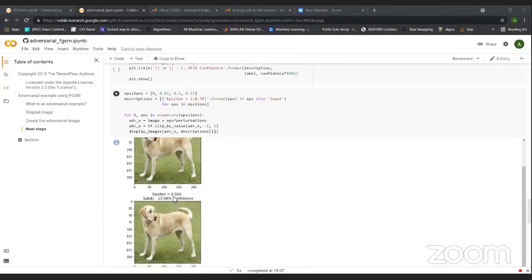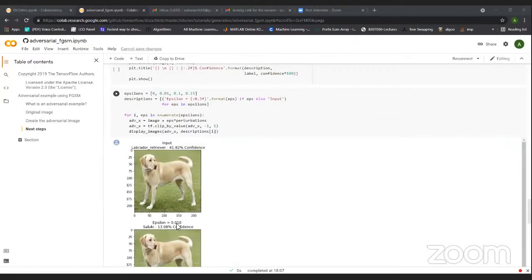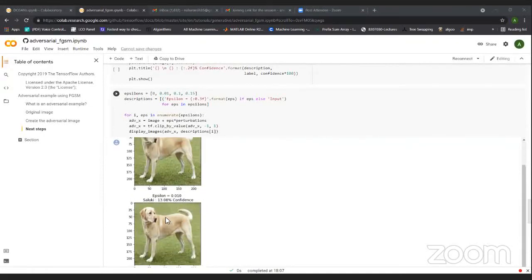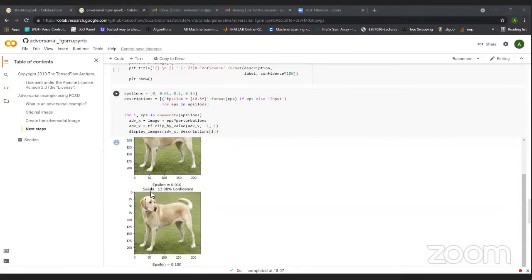So here the epsilon is 0.10. You're seeing how less it is, 0.10 only. And the same dog is classified as Saluki. Saluki is a different breed of the dog, and a lot of difference is there between the Lab and the Saluki.